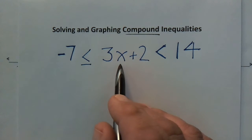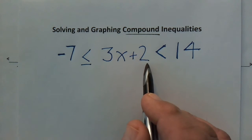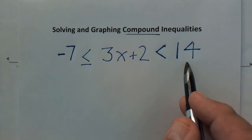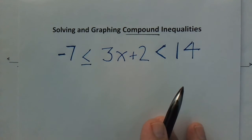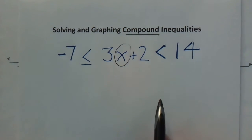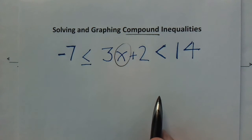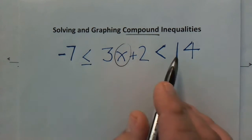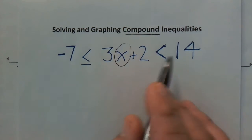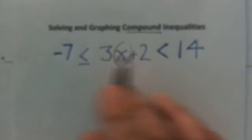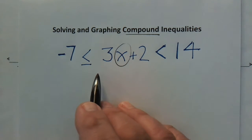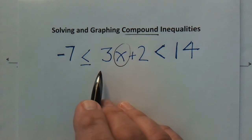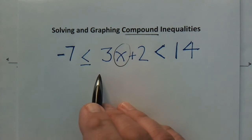So we read the expression as: negative 7 is less than or equal to 3x plus 2, which is less than 14. To solve this, we want to isolate x — get x by itself. There is more than one way to do this. My preferred method is to solve both outer sides at once, working the whole compound inequality together. Some books or instructors may have you break it into two separate items, but I like to do them together.